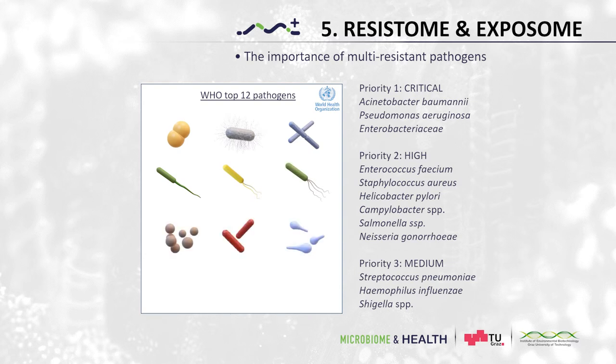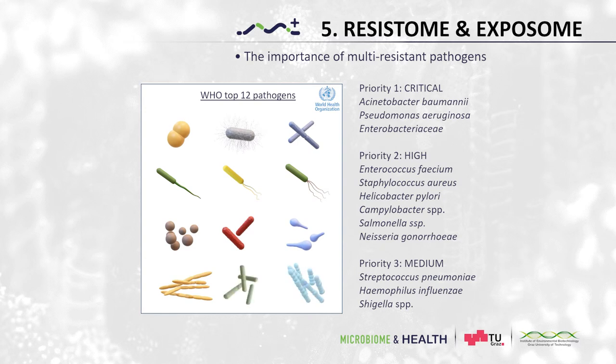The World Health Organization has issued a top 12 list of emerging antimicrobial-resistant pathogens that pose a high risk for humankind. This list includes bacteria such as Acinetobacter baumannii and Pseudomonas aeruginosa that were believed to be a burden of the past. We must therefore put targeted countermeasures into action in order to escape the increasingly threatening antibiotic-resistant crisis.